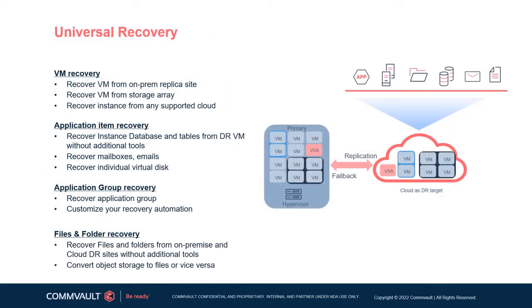This offering comes with many advanced capabilities, as the Commvault Disaster Recovery product utilizes the backup side of the platform, giving users potentially flexible recovery types as well. When it comes to VMs, they can recover from on-prem replica sites, storage arrays, or any instance from any supported cloud. Application item recovery allows individuals to recover databases and tables, mailboxes, and more. Recovery of files and folders is also available through this single solution with no additional tools required.